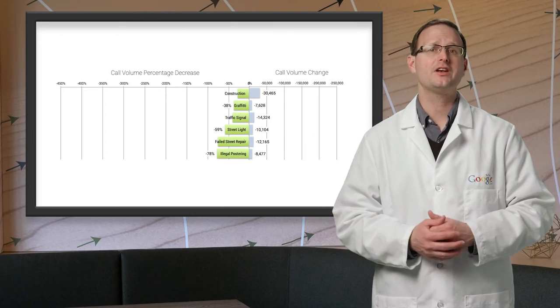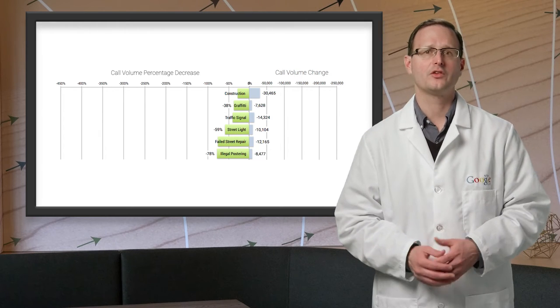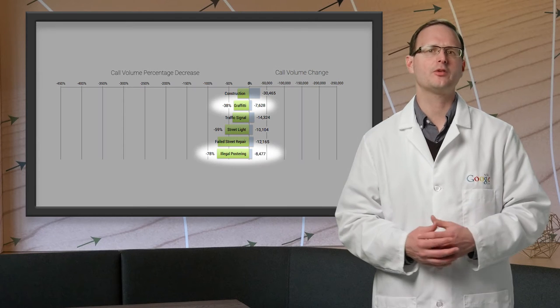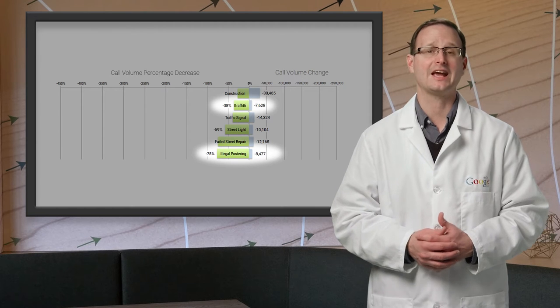Thankfully, the trend hasn't been entirely one way, with many complaint types seeing significant decreases. The city walls are looking cleaner, with complaints about graffiti and illegal postering both down, and illegal postering specifically down nearly 80%.